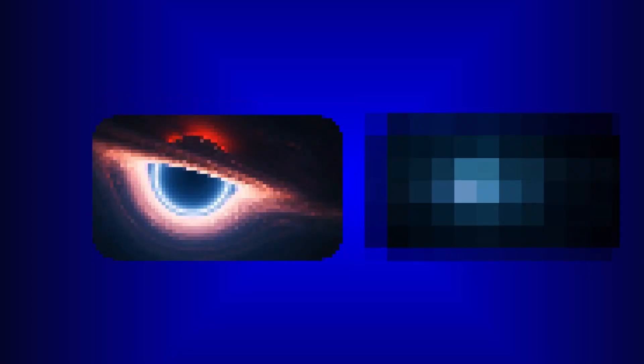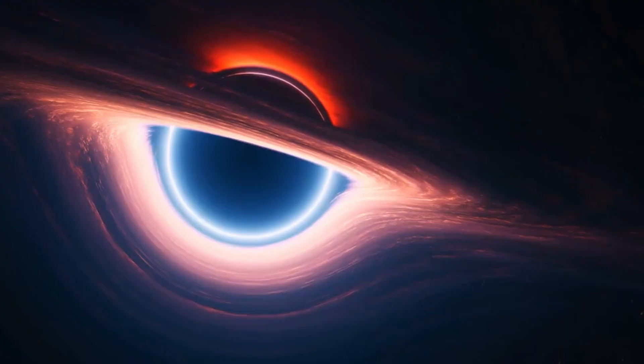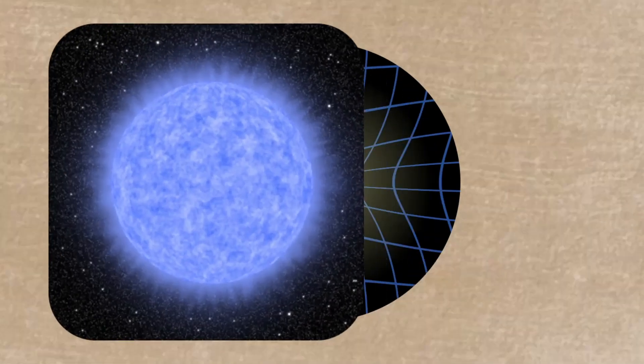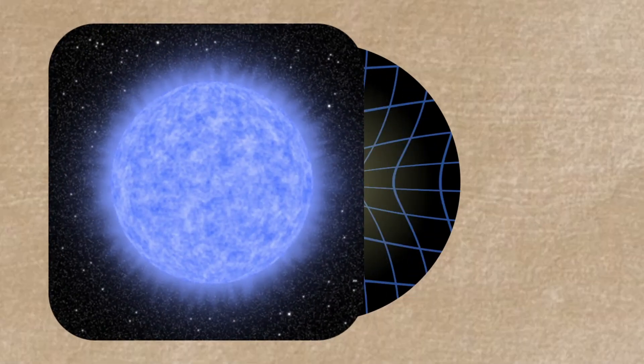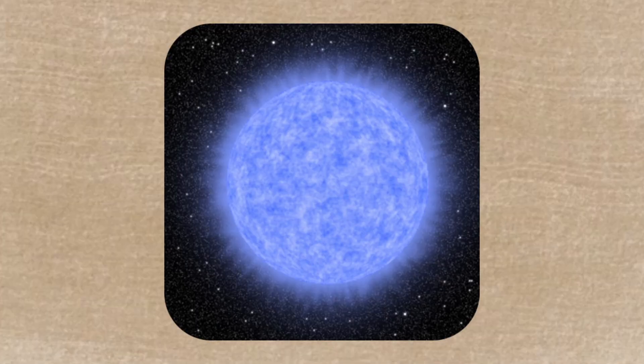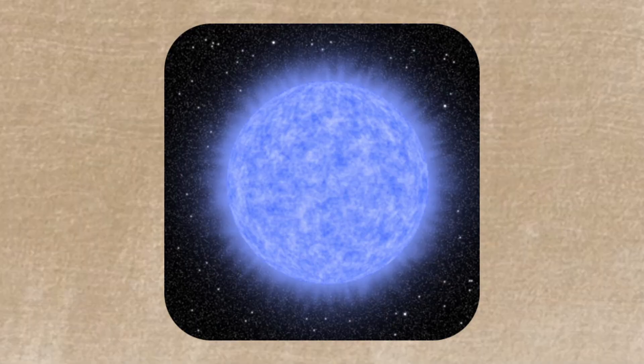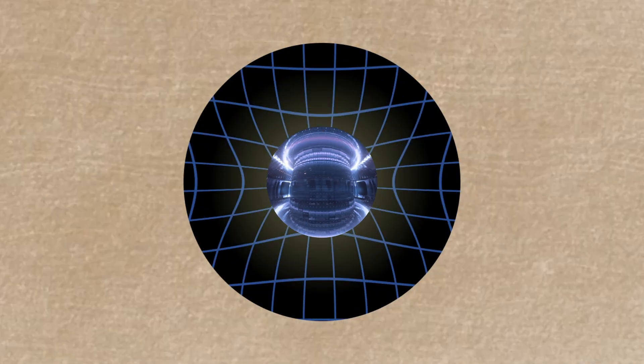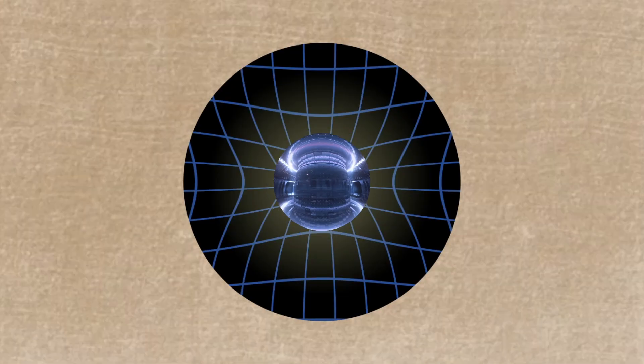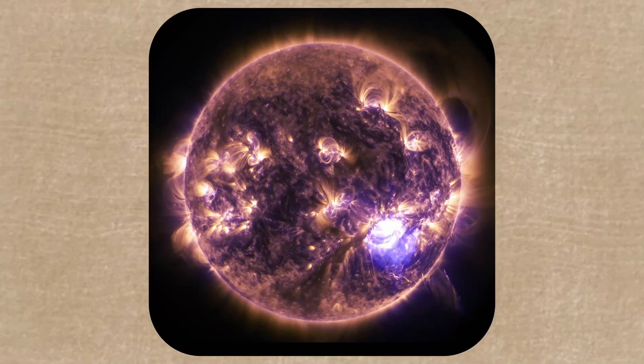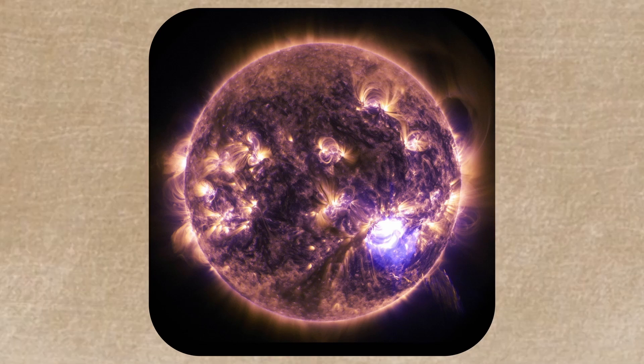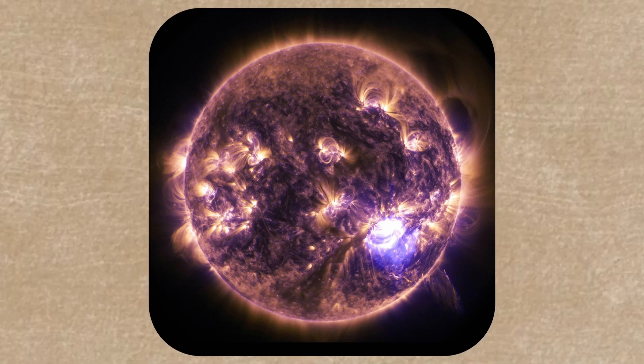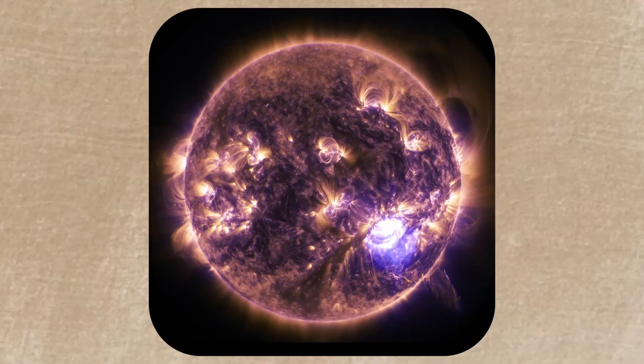Let me tell you about the two main places where we believe singularities exist. The first and most famous location is at the center of black holes. Picture this: you have a massive star, maybe 20 or 30 times more massive than our sun. This star has been burning for millions of years, fighting a constant battle between two forces. On one side, you have nuclear fusion in the star's core, pushing outward with tremendous energy. On the other side, you have the star's own gravity, trying to crush everything inward. For most of the star's life, these forces are balanced. But eventually, the star runs out of fuel for fusion. When that happens, gravity wins. And it wins big.